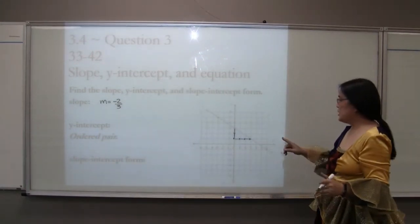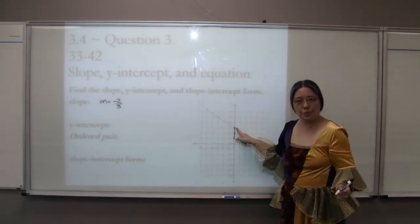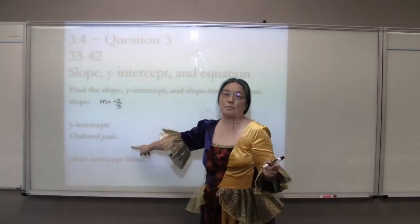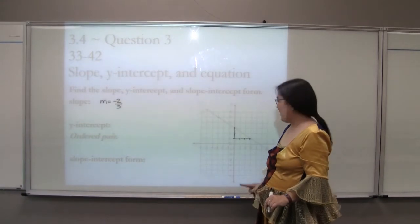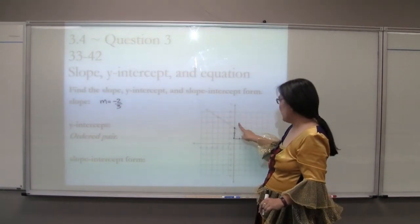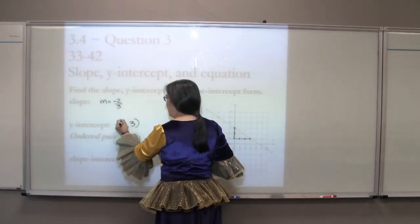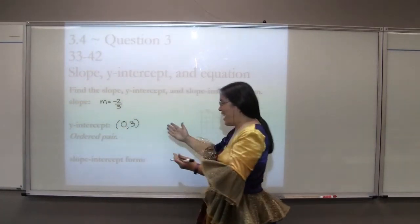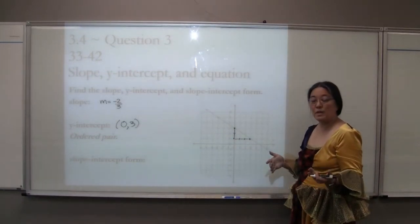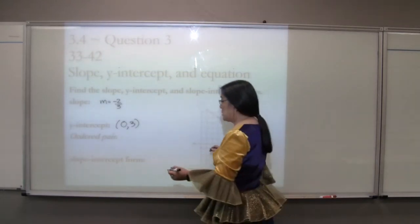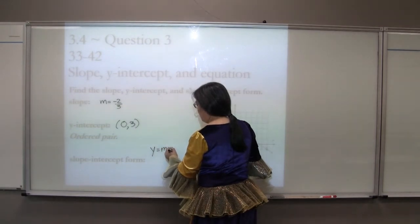Then the y-intercept. The y-intercept is this point where it hits the y-axis. It's not just 3. We have to give it as an ordered pair. It has a reminder to write it as an ordered pair. And a lot of students still don't write it as an ordered pair. This is 3 on the y-axis. The 3 goes on the y-spot and the x is 0. That is our y-intercept.